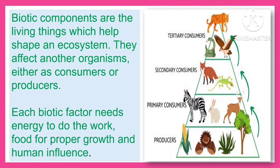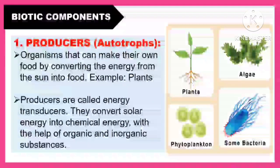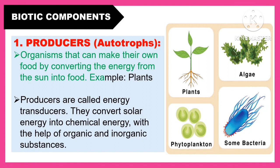They affect other organisms either as consumers or producers. Each biotic factor needs energy to do the work for food, proper growth, and human influence. The following are the biotic components. The first one is the producer or the autotrophs. These are the organisms that can make their own food by converting the energy from the sun into food. Examples for this are the plants. Producers are called energy transducers. They convert solar energy into chemical energy with the help of organic and inorganic substances.